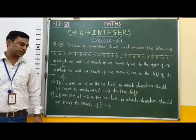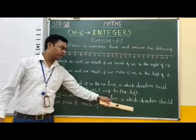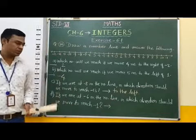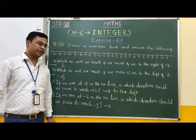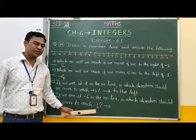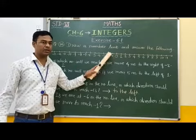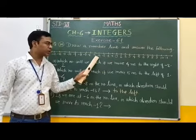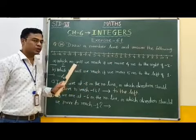Next question: If we are at minus 6 on the number line, in which direction should we move to reach minus 1? We start from minus 6 and have to reach minus 1. We move from minus 6 to minus 1, so we move to the right of minus 6 to reach minus 1. Therefore, the answer of this question is to the right.